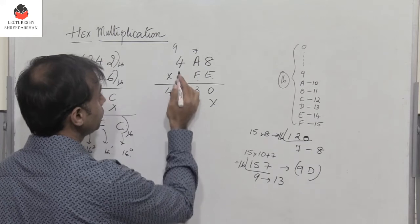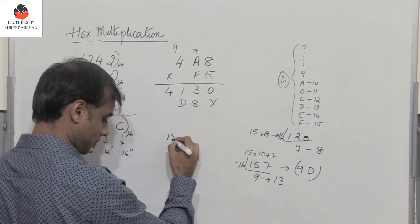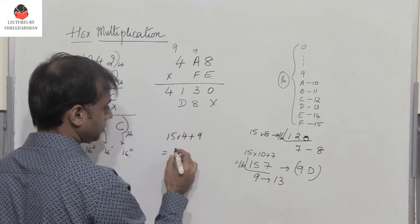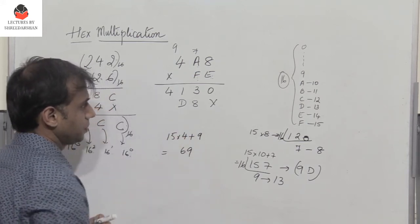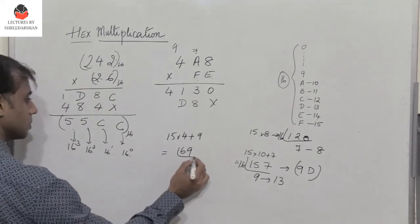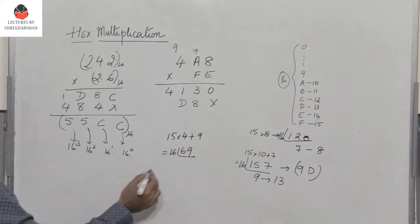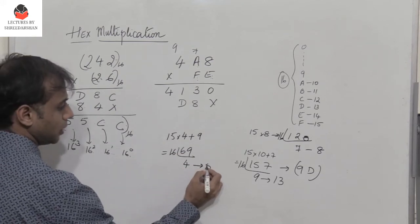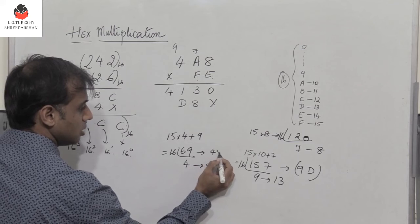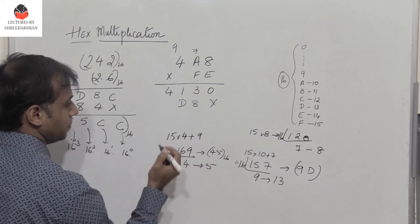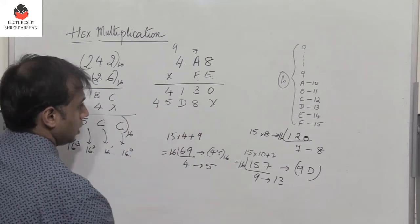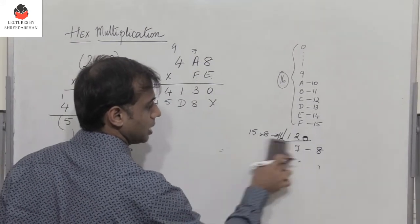So next 15 into 4. So 15 into 4 plus 9, I get 69. So 69 again I need to divide it by 16. So I get 4 and 5. So 69 in decimal is 4, 5 in hex. So I write 5 and 4 here. So now we have finished with the process of multiplication.